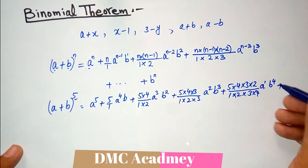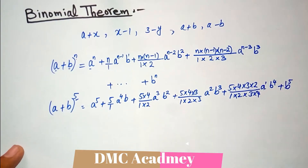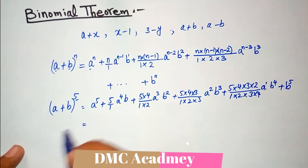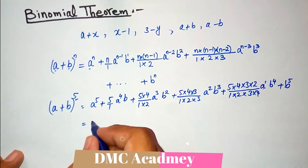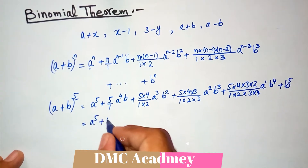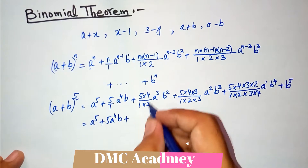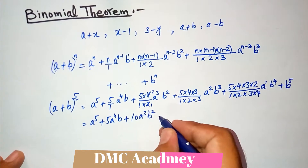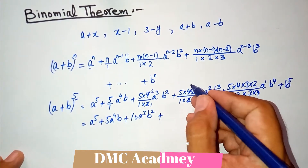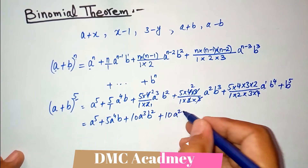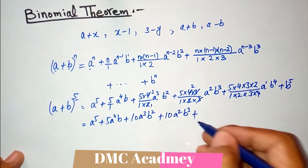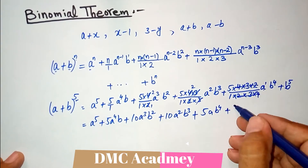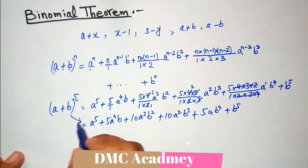If you simplify, you get: a raised to power 5, plus 5 times a raised to power 4 times b, plus 10 times a raised to power 3 times b squared, plus 10 times a squared times b raised to power 3, plus 5 times a times b raised to power 4, plus b raised to power 5. So this is your expanded formula for a plus b whole raised to power 5.